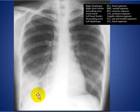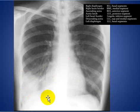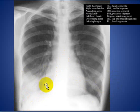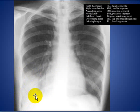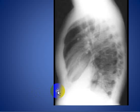In another example, you see an opacity obliterating the right hemidiaphragm, while the right cardiac border is not obliterated and is well seen. Therefore, that opacity is located in the right lower lobe basal segments, as confirmed on the lateral chest X-ray.